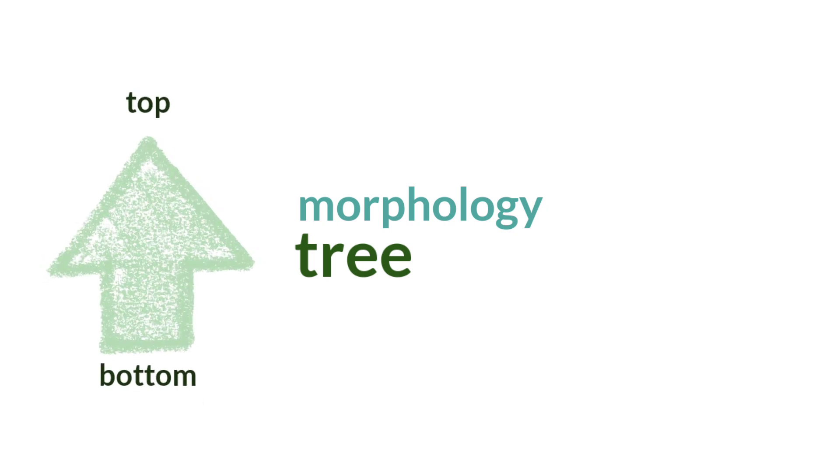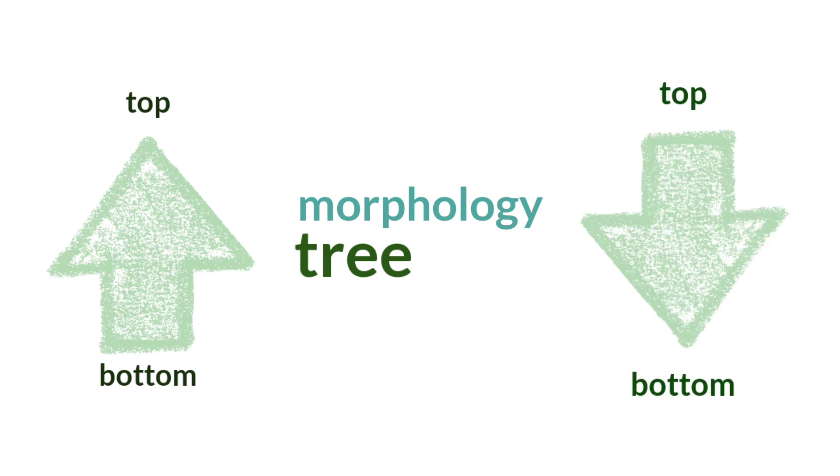Actually, there are two different approaches in doing the tree diagram. Some people do the bottom to top and some people also use top to bottom approach. Nonetheless, we are going to try these two approaches in making a tree diagram for the word indiscriminatingly.